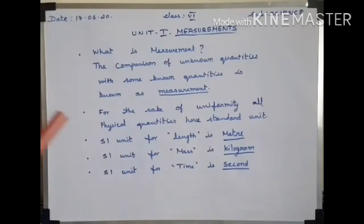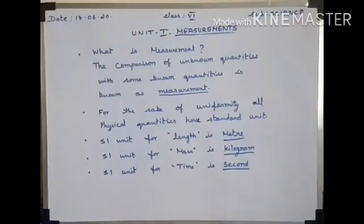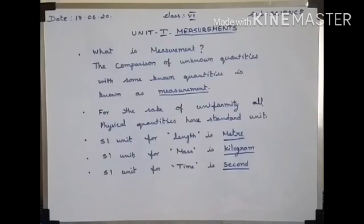The lesson I am going to teach you today is Measurement. Now, what is the need for measurement? It is very difficult to make a correct judgment about an object without making an actual measurement. In order to make your judgment accurate, the actual measurements are to be taken. Suppose you want to purchase a cloth for making a shirt, or to find out the temperature of a sick person — accurate measurements are necessary.